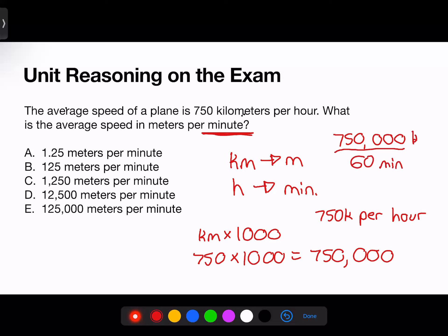Make sure to always carry your units. When I type that in the calculator, I receive the answer of 12,500 meters per minute, which is answer choice D.